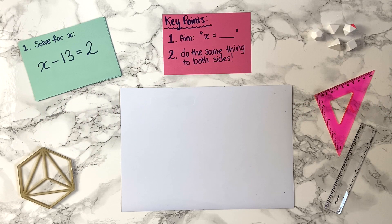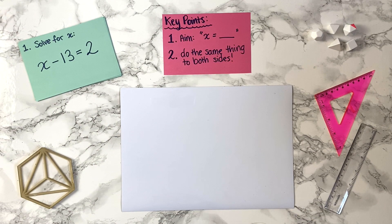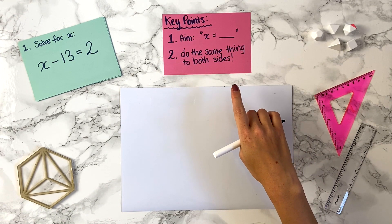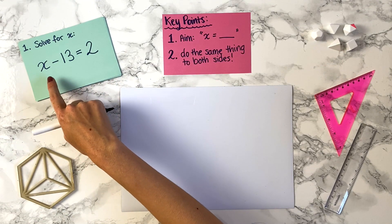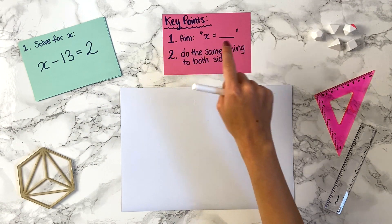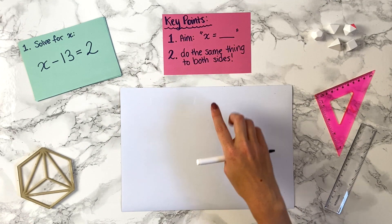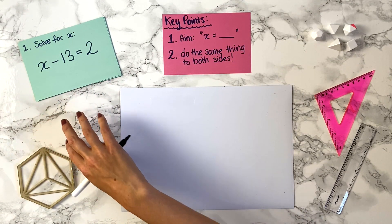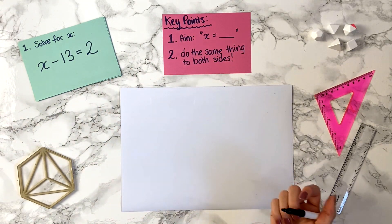Let's have a go at solving some equations for x. The easiest way to learn is by seeing lots of examples, so we'll dive straight in. There are just two key points to mention first: when you see 'solve for x', the aim is to get x on one side of the equal sign on its own — x equals a number. And second, if you do one thing to one side of the equation, you do the same thing on the other side.